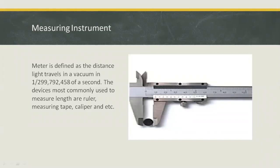For small-scale measurements, we have calipers, and for more exact values, we use digital calipers. The meter is defined as the distance light travels in a vacuum in 1/299,792,458 of a second.